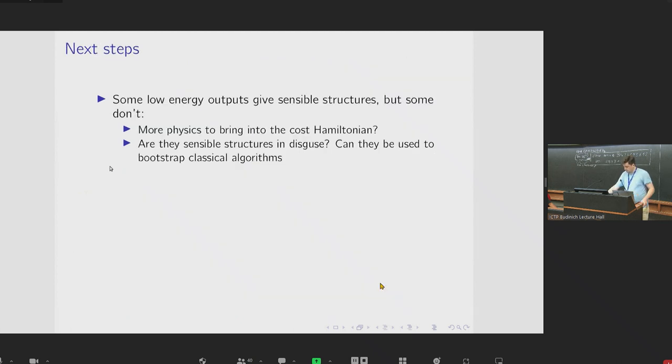So on to what we hope to do next. So firstly, it seems that not all of the low energy outputs give sensible structures. So this begs the question of can we bring more physics into the cost Hamiltonian to maybe rule some of these out. An alternative to this, which I'm convinced could be an alternative based on discussions with the crystallography collaborators. So perhaps these are sensible structures in disguise, sort of. So perhaps that some of the substructures are correct, but they could be sort of wrong relative to each other. And if that's the case, then they could maybe be used to bootstrap classical algorithms.